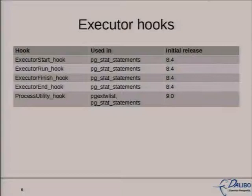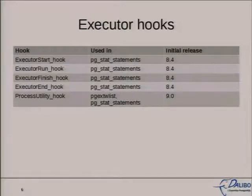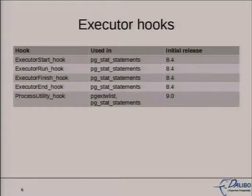On the executor hooks, I believe that everyone in this room already knows about a plugin called pg_stat_statements. pg_stat_statements is a contrib module that is able to get all the queries executed by PostgreSQL and get a few statistics on them. And how does pg_stat_statements work? It uses these hooks — for example, the executor start, run, finish, and end — to get information about which queries are executed, how many rows they read, how many buffers they used, et cetera.